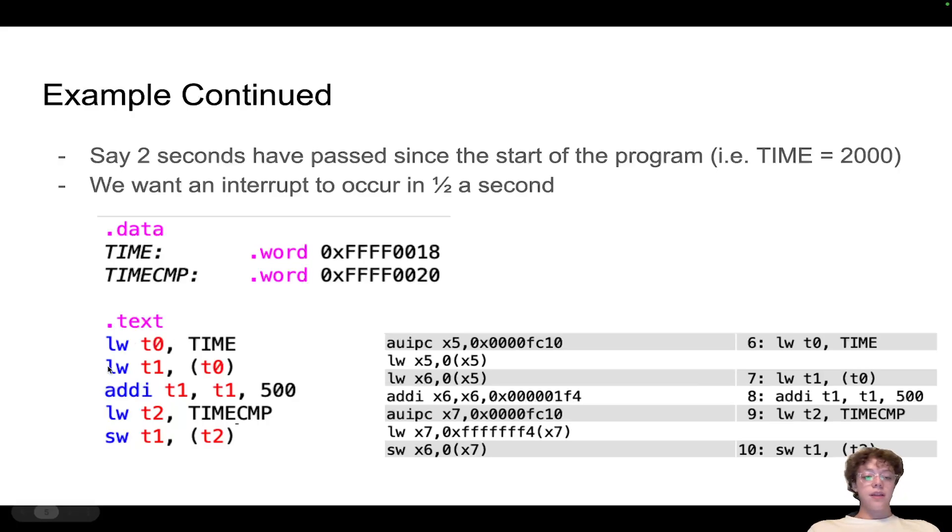Then we've got to get the amount of time that's actually passed, so we load from t0 into t1. So now t1 should contain the value 2000, because that's how much time has occurred since the start of the program. Now what we do is TIMECMP equals TIME plus 500.